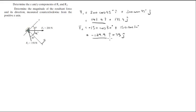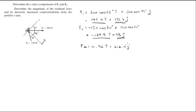When you add the x components with the x components and the y components with the y components, you get that the resultant force is equal to 11.52 i plus 216.4 j. Notice that the x components almost cancel out and the y components kind of magnify each other, so we end up with a force somewhere over there.